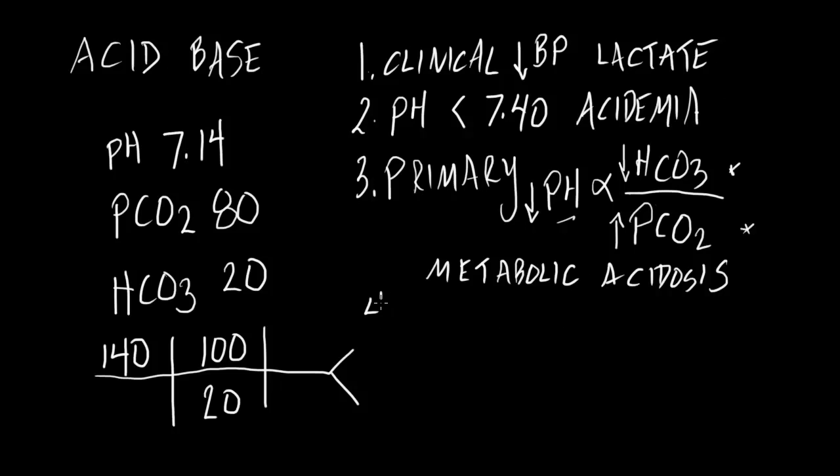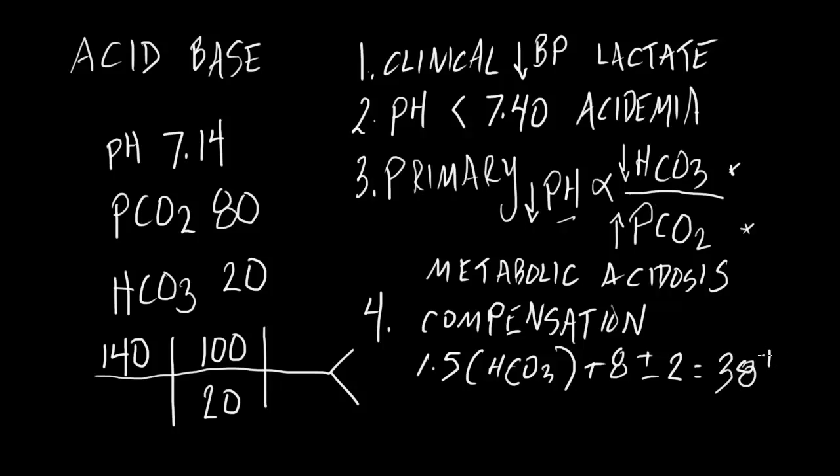So, I'm going to do the patient's compensation based on what I believe the primary to be, which is a metabolic acidosis. Remember, our compensation for metabolic acidosis is the Winter's formula, which is 1.5 times the bicarb plus 8 plus or minus 2, which in this particular case equals 38 plus or minus 2.